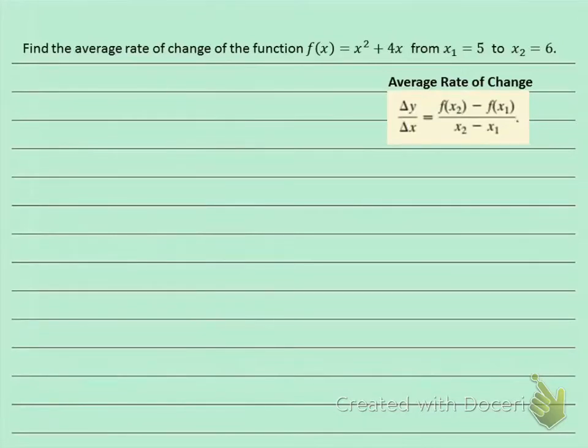Find the average rate of change of this function from x₁ = 5 to x₂ = 6. So when we're moving one increment to the right, how high up or down does it go? That's the average rate of change.